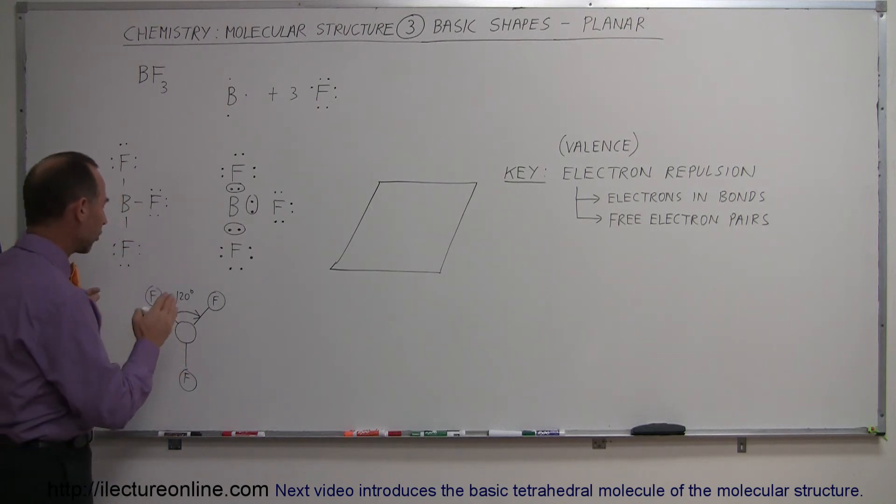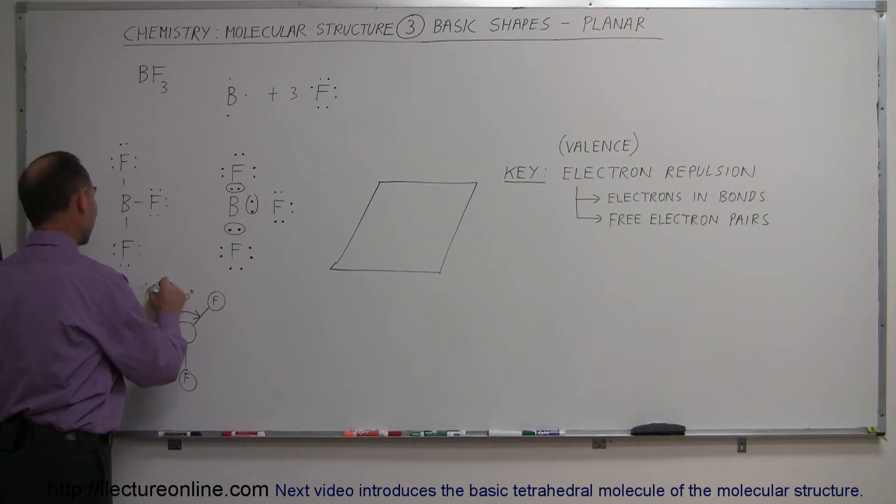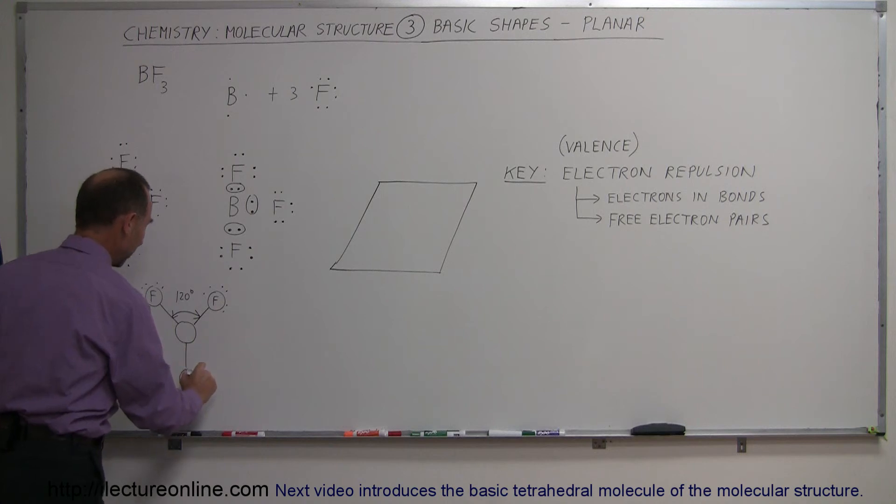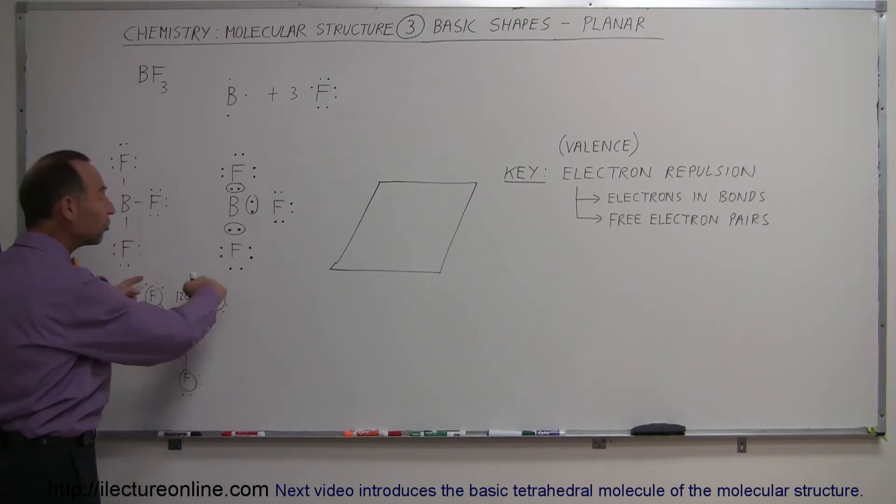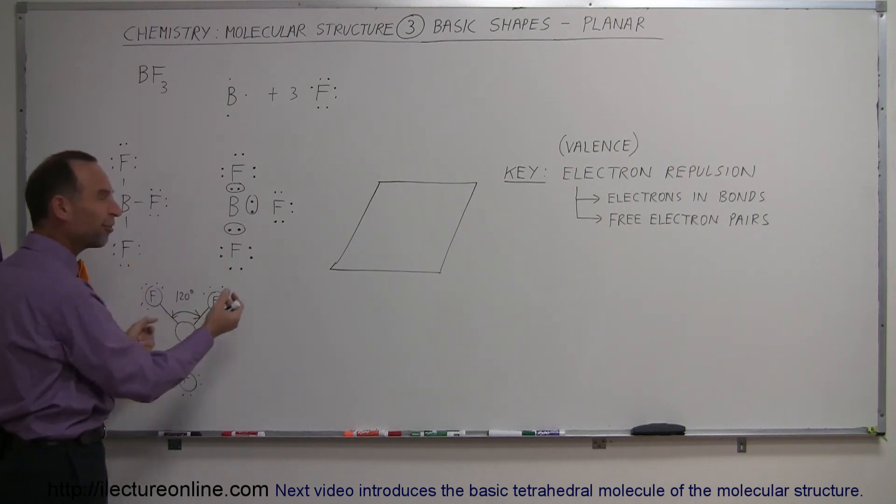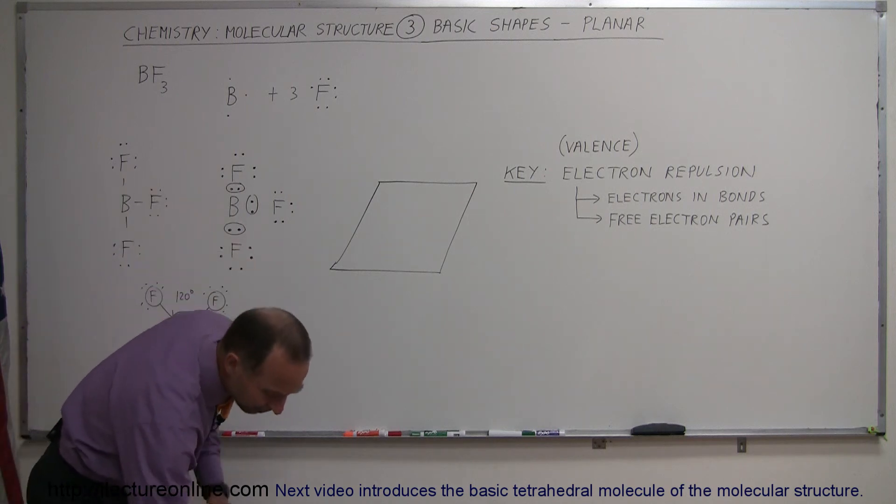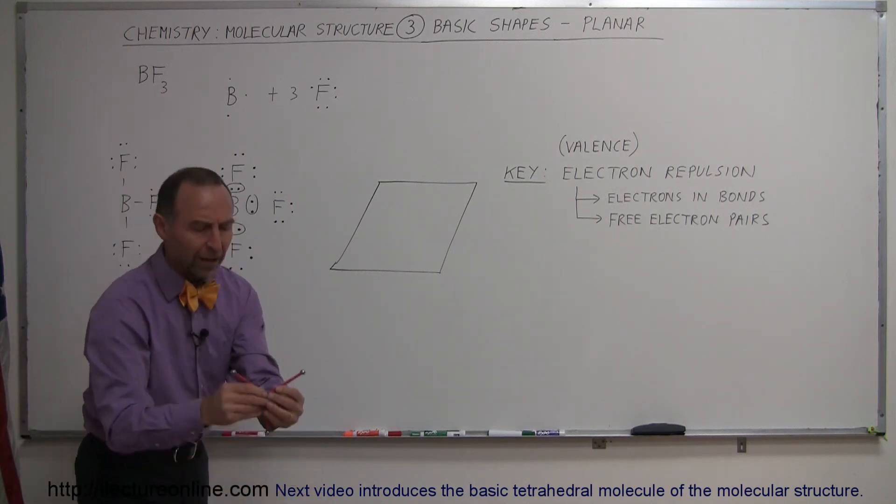So why would it be that they actually are in a planar format? Don't forget that they also have these free electrons. Each fluorine has three free electron pairs and of course they repel each other as well. Not only do the bonds repel each other, everything wants to be as far away from each other as possible and so here I have a little indication of that.